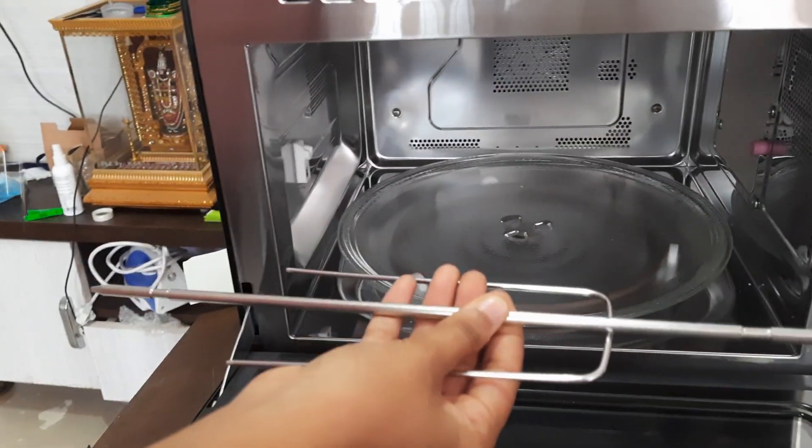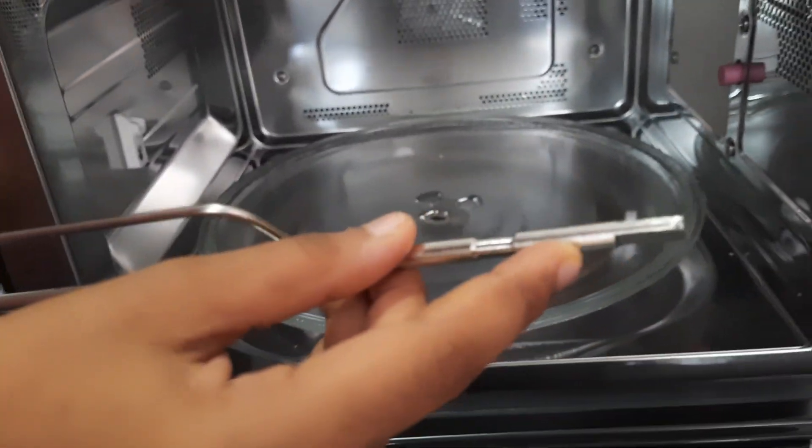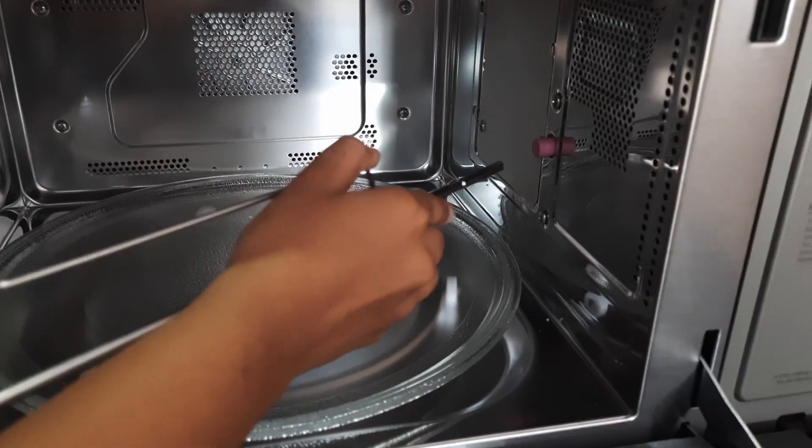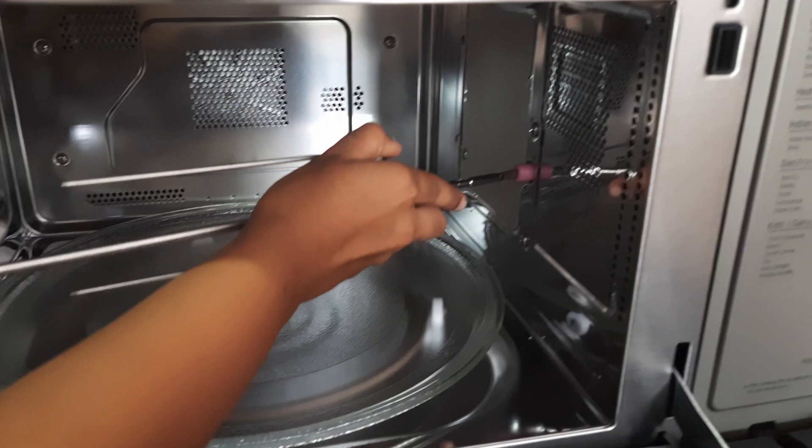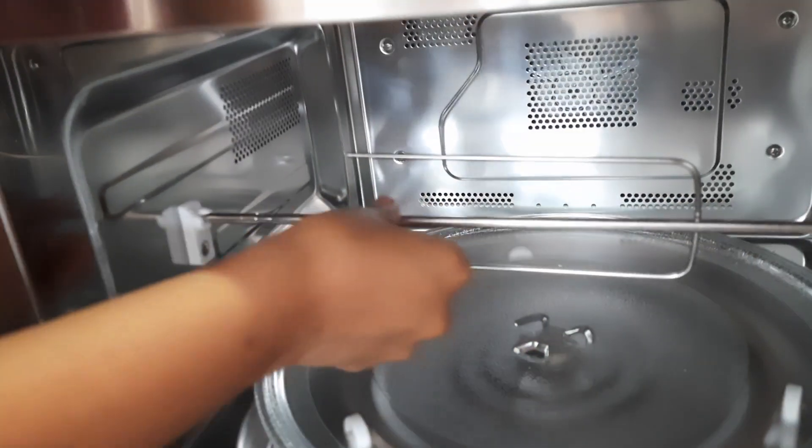Now I will show you how to use the roti. If you see this end which looks like half cut, that goes on the pink side, and the pointed end goes on the left side, the white one.